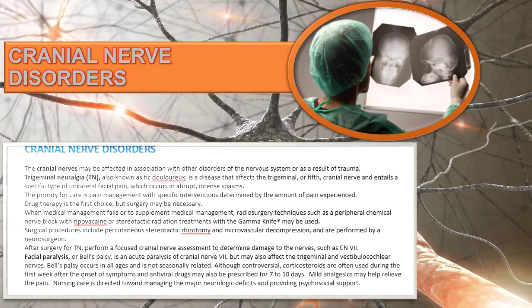A few cranial nerve disorders to review: cranial nerves may be affected in association with other disorders or as a result of trauma. Your textbook discusses trigeminal neuralgia, or tic douloureux, a disorder that affects the trigeminal or fifth cranial nerve. It also covers facial paralysis and Bell's palsy. It's important that you use these notes to understand how to care for these patients, what the number one priority is, and what medications are given for these conditions.